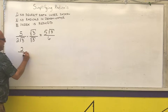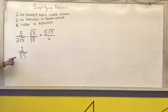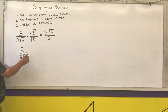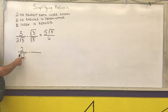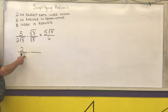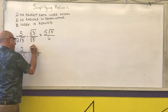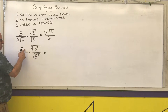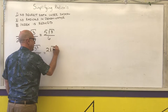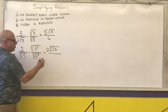Next example: if you have higher power roots — for example, the cube root of 5 in the denominator — I'm not just going to multiply by the cube root of 5 because it still won't disappear. I want the exponent underneath the radical to equal the index. Right now I've got a 1, so I need 2 more 5s underneath the radical. Multiplying numerator and denominator by the cube root of 25, the top becomes 2 times the cube root of 25, and the bottom becomes the cube root of 5 cubed, which is just 5.